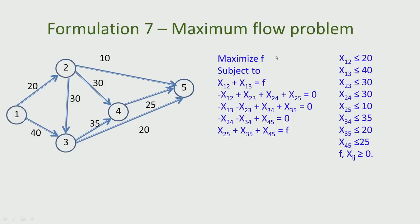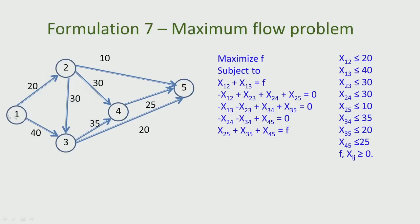This completes the formulation of the maximum flow problem. The objective is to maximize F. There are 5 constraints — one for each node — generally called flow balance constraints, built on the principle that for every node whatever comes in has to go out. We also have arc capacity constraints. The number of variables equals the number of arcs plus 1 (for F), and the number of constraints equals the number of nodes plus the number of arcs.